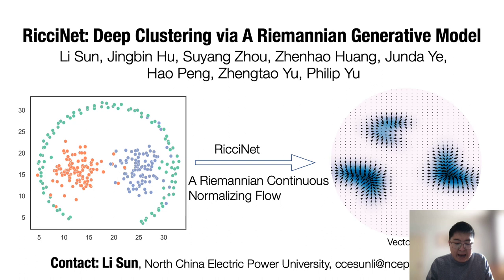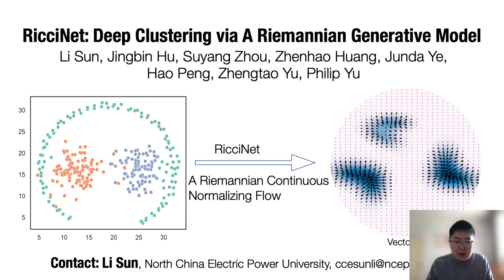In this paper, we rethink the problem of deep clustering and introduce Riemannian geometry to deep clustering for the first time. Deep clustering in the Riemannian manifold still faces significant challenges: Ricci Flow itself is unaware of cluster membership, Ricci curvature prevents gradient backpropagation, and learning the manifold largely remains open.